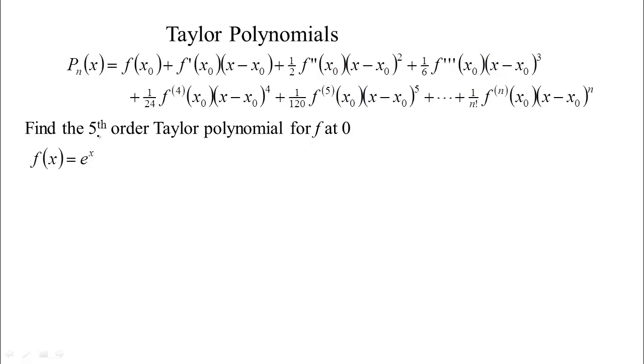We want to do the fifth order Taylor polynomial again for e to the x this time. So if we're going to go fifth order, we need the function and five derivatives. But fortunately in this case the derivatives are all the same. We get e to the x. The derivative of e to the x is e to the x again. Fourth derivative is e to the x still. Fifth derivative is still e to the x.